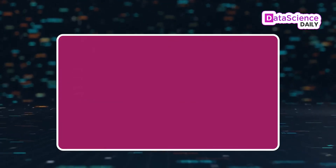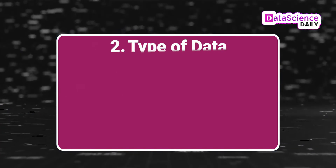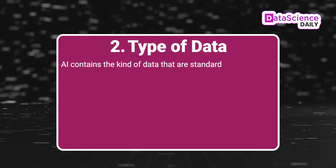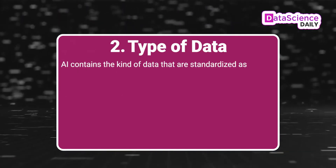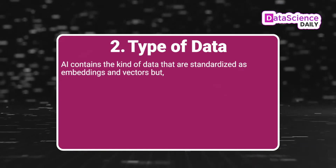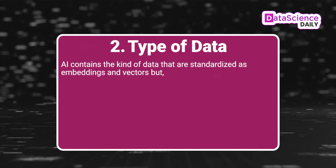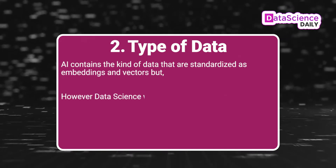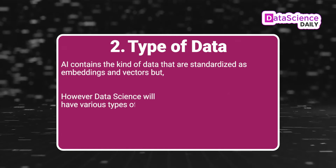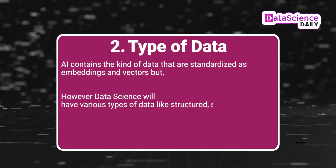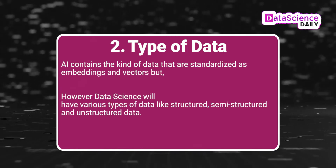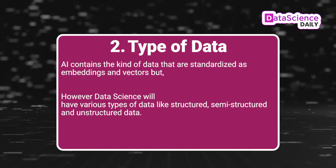2. TYPE OF DATA — AI contains the kind of data that are standardized as embeddings and vectors. However, data science will have various types of data like structured, semi-structured, and unstructured data.